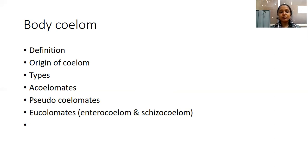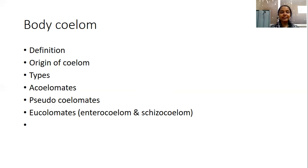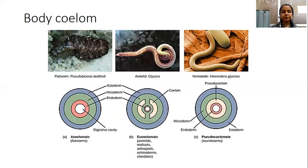Next, we'll look into the types of coelom. We can categorize the animal kingdom into three different types based on the presence or absence of coelom. That is: acoelomates, pseudocoelomates, and eucoelomates.